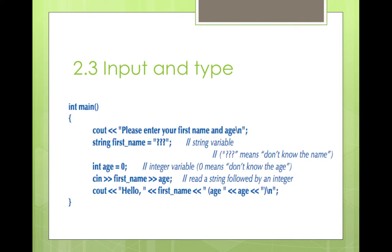Let's talk about section 2.3 which is input and type. The input operation, as I've already explained, uses the greater-than and less-than signs. The character output and character input will dictate whether the compiler should take input from the user or display output to the user. Let's have some quick fun with this coding.